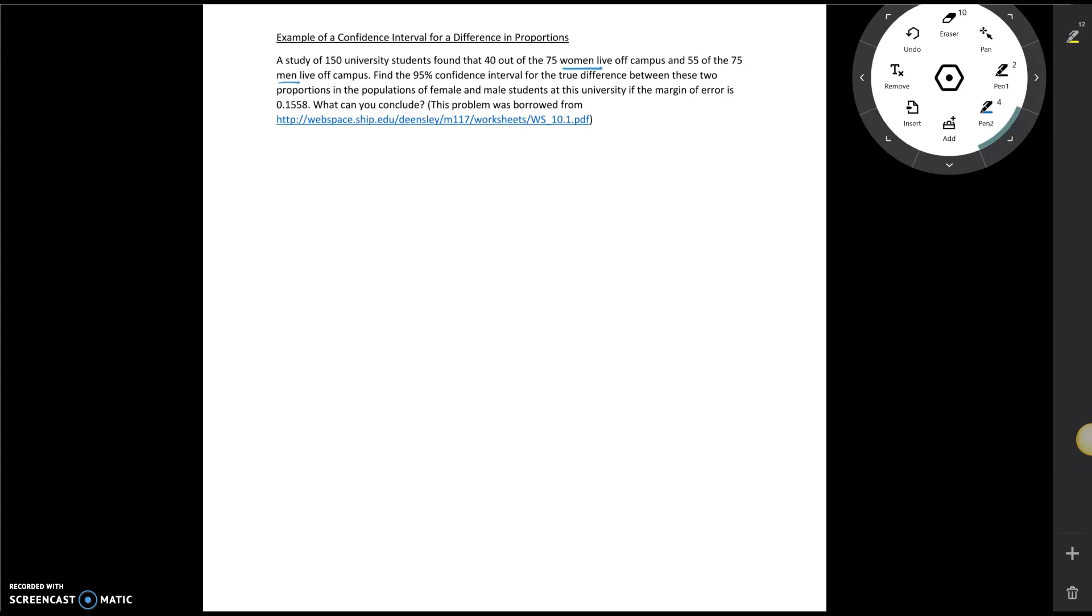As always we are going to start by checking our sample size. We have two different groups here. The first one is women. So we've got 40 women live off campus. Well if 40 of the 75 live off campus that tells me that 35 women live on campus.